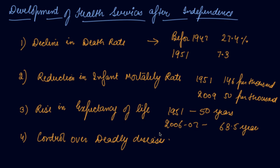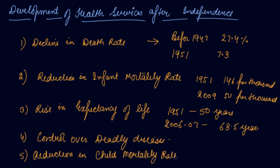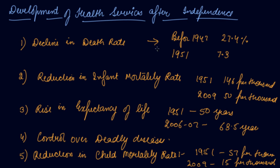Fifth is the reduction in child mortality rate — the death of children before the age of four years. In 1951 it was about 57 per thousand children, but in 2009 it is only 15 per thousand. With this reduction in rates, it is clear that health facilities in India have improved, and many nutrition programs have been established in India to maintain good health.